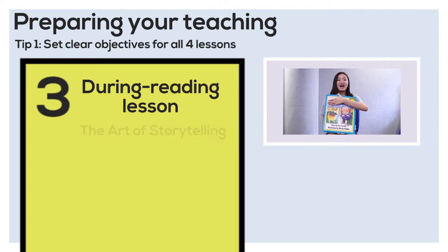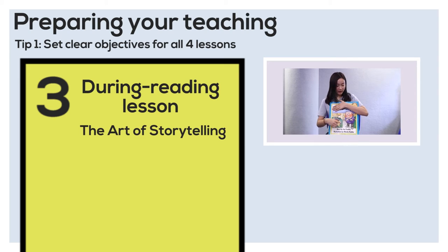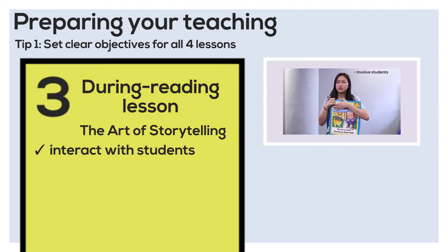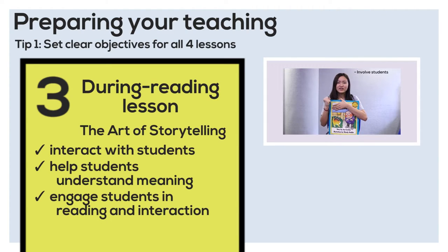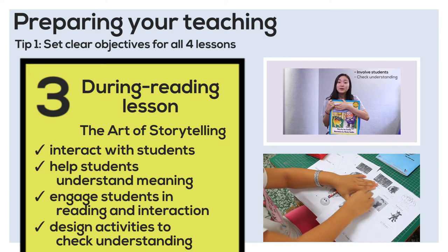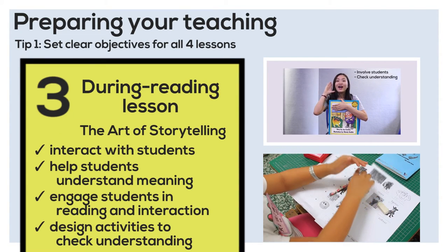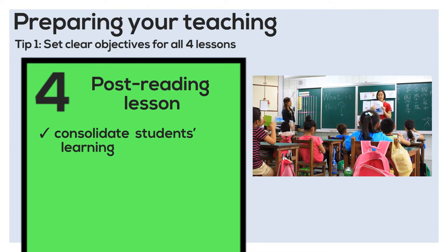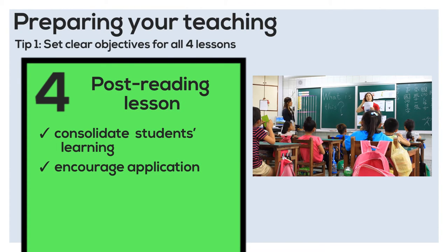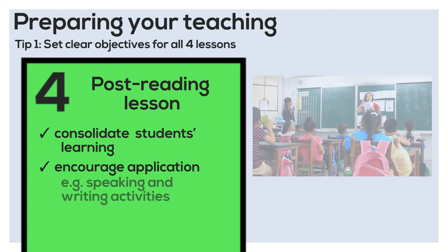Remember all the tips we gave you on how to tell your story? All those tips apply in this lesson as well. Your objective is to interact with the students, help them understand the meaning of the story, and most importantly, engage them in simple communication. You also need to design activities to check understanding. The final lesson is called the post reading lesson. Your goal is to help students consolidate everything they have learned and give them the opportunity to use everything they have learned. This would be a good time for students to practice more advanced skills such as writing or speaking.